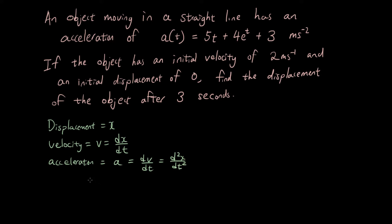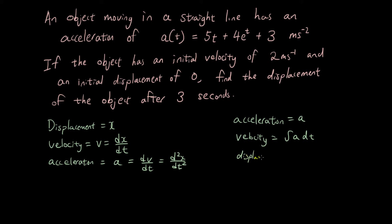You should know that already. If we can differentiate displacement to give velocity and differentiate velocity to give acceleration, then we can do the opposite — integration. So if we have acceleration a, we can get velocity by integrating acceleration with respect to t, and we can get displacement by integrating velocity with respect to t. Going down one path is differentiation, and going the other way is integration.